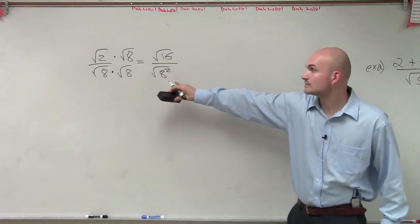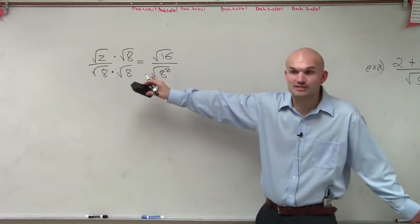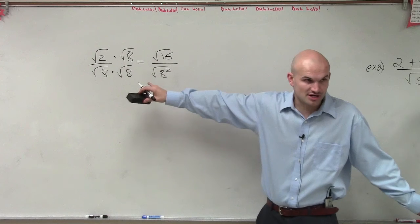Now, I'm multiplying them. I'm writing them squared because remember, what's the square root of something squared? Your square root of 8 squared is just 8.